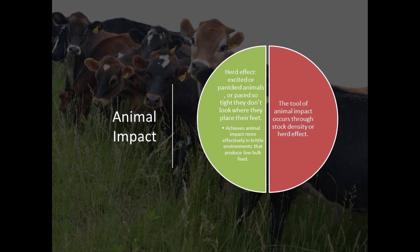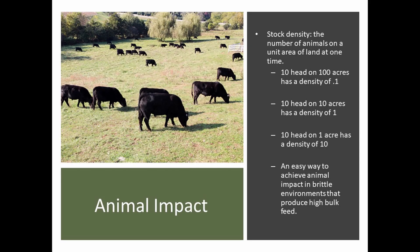So let's discuss stock density. Stock density is the number of animals on a unit area of land at one time. Let's say you have 10 head of cattle on 100 acres — that has a density of 0.1. Ten head of cattle on 10 acres has a density of 1, and 10 head of cattle on 1 acre has a density of 10. In brittle environments, the greater the stock density, the higher the impact. Ultimately, this will produce more feed over time.